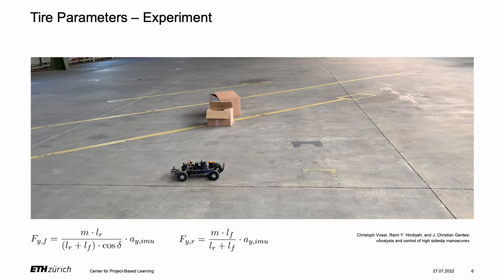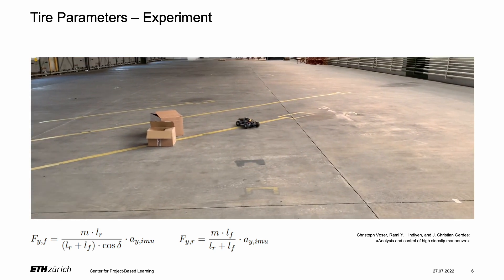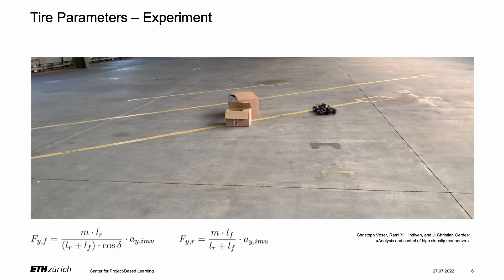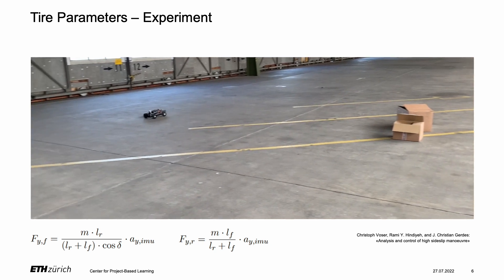For this, the lateral forces produced by the tires at different steering angles were found through a simple experiment where the car drove at fixed speed and slowly varying steering angle, making it possible to relate the measured IMU acceleration to the forces at the tires.